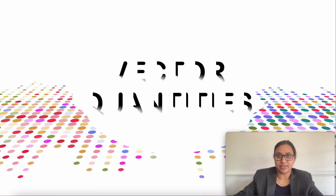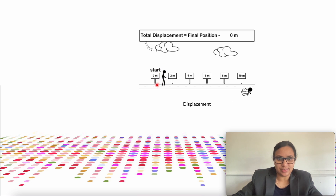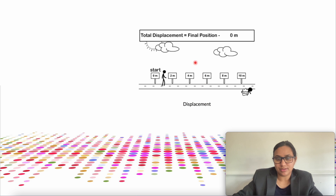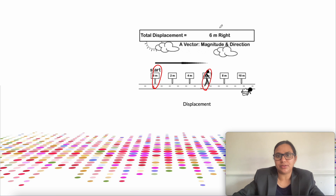Next, what are vector quantities? As you can see here, a person has a starting point at zero. Then he started moving 2 meter, 4 meter, 6 meter, 8 meter, and 10 meter. In the last class we learned how to calculate displacement. Total displacement is the final position minus the initial position. Here the initial position is zero, and the final position is 6 meter, so the total displacement is 6 meter.